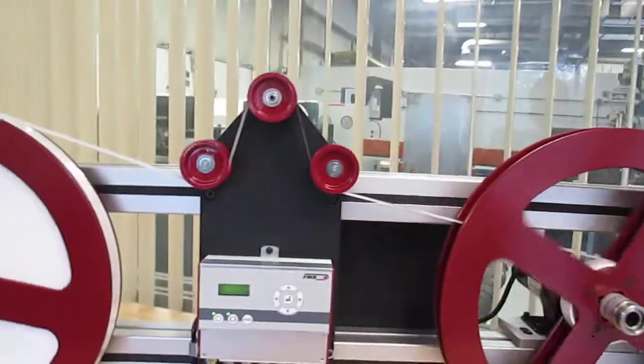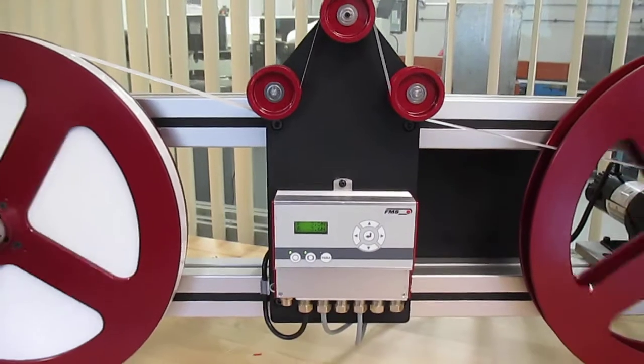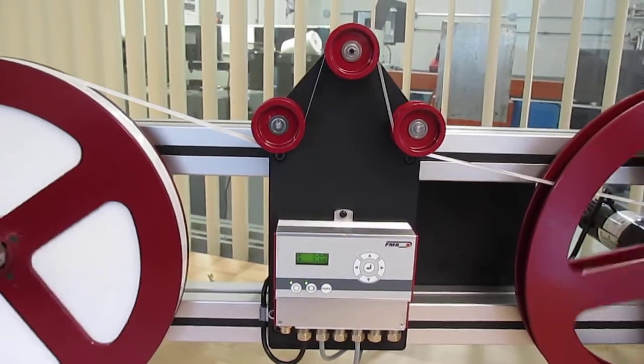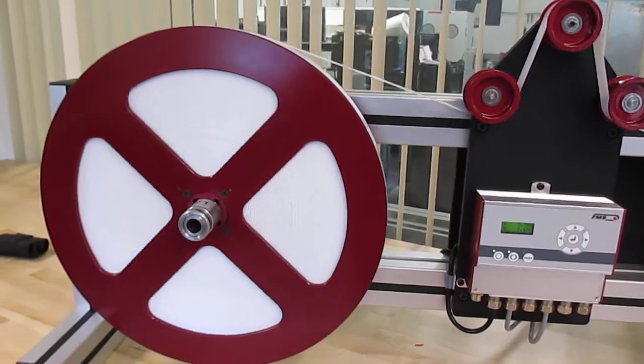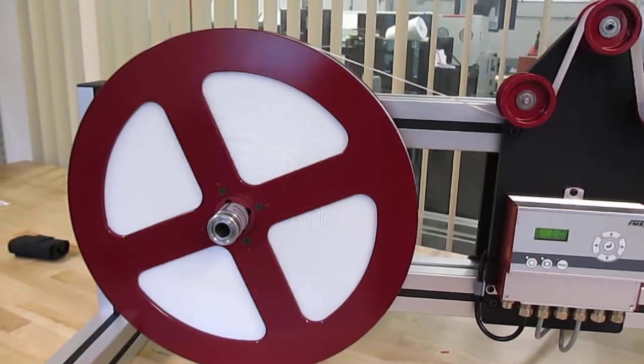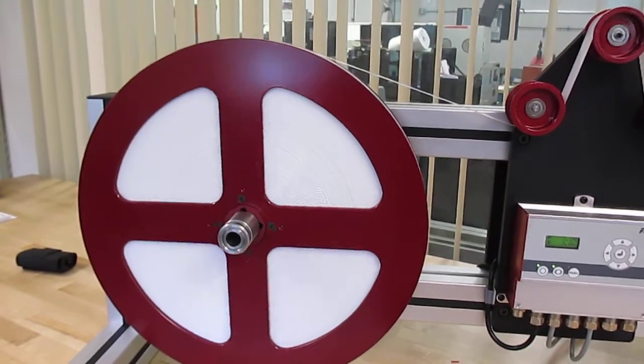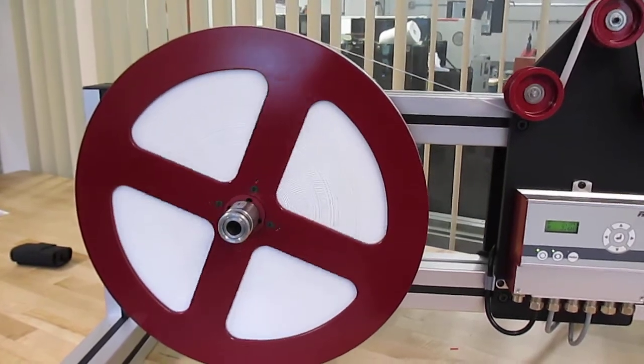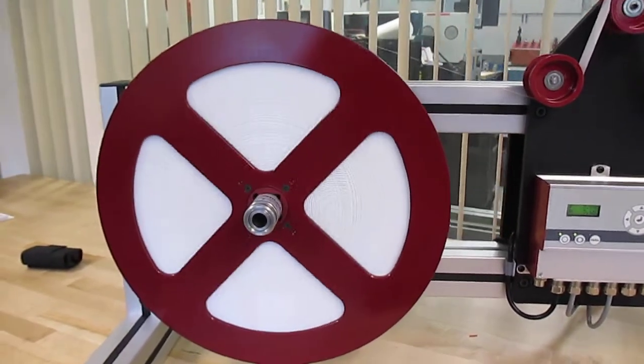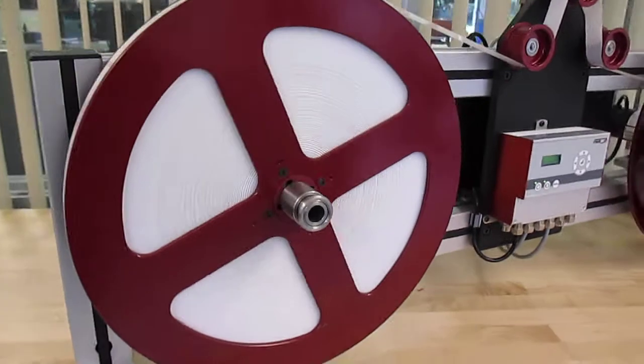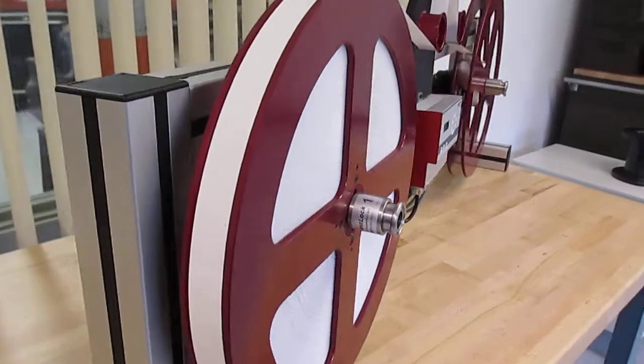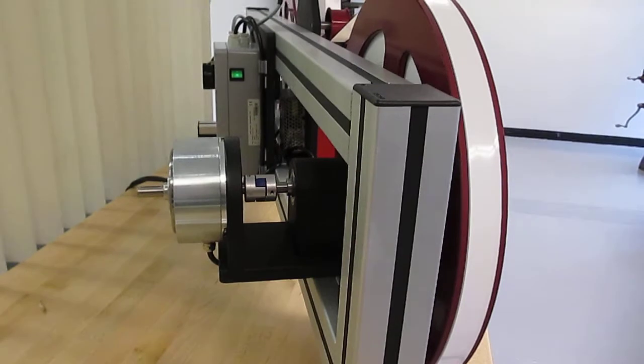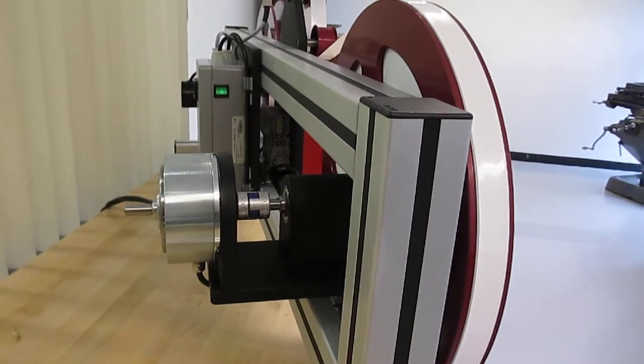It's important to use a tension amplifier in a system like this where the diameter of the takeoff payoff spool changes from 18 inches down to 3 inches. In a constant torque type of brake without feedback, the tension will increase by a factor of 6 times.